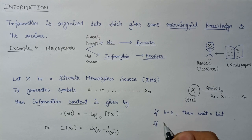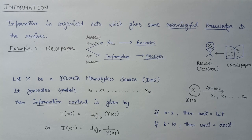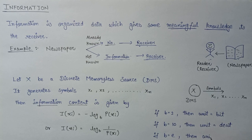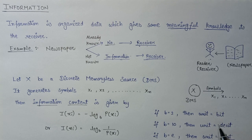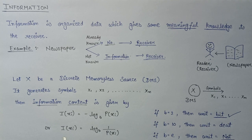There are three values of base b for which information content can be calculated. If b equals 2, the unit of information is the bit. If b equals 10, the unit of information is the dit. If b equals e, the unit is the nat. Generally, we use the bit as the unit of information content, so we use log base 2 in place of log b.